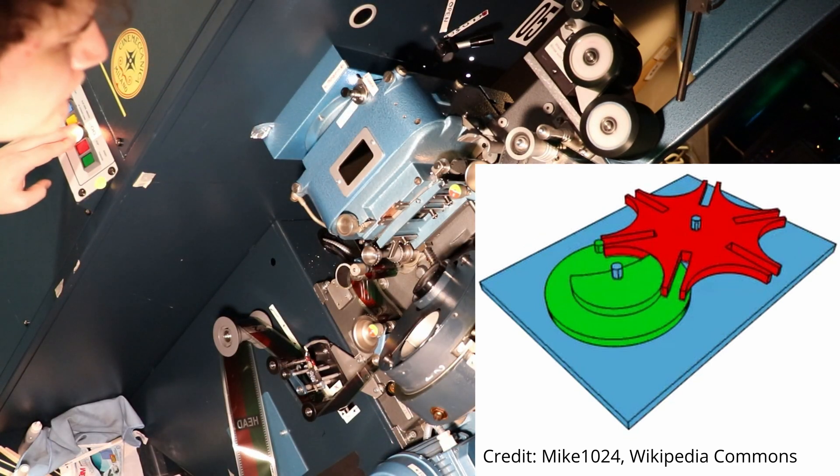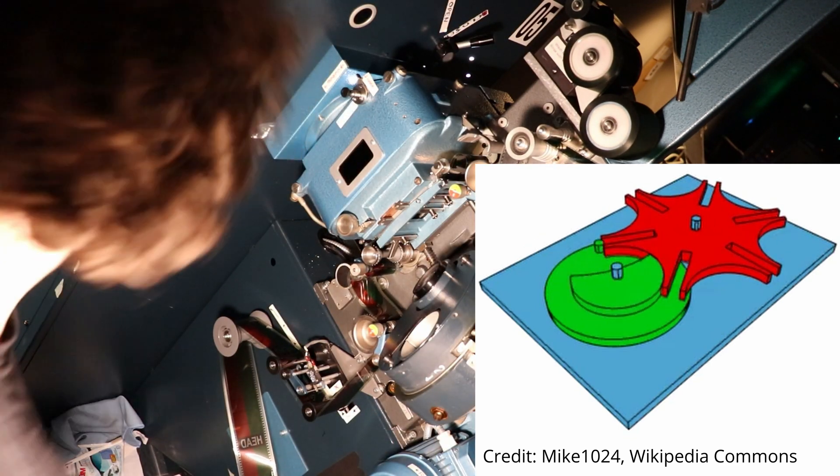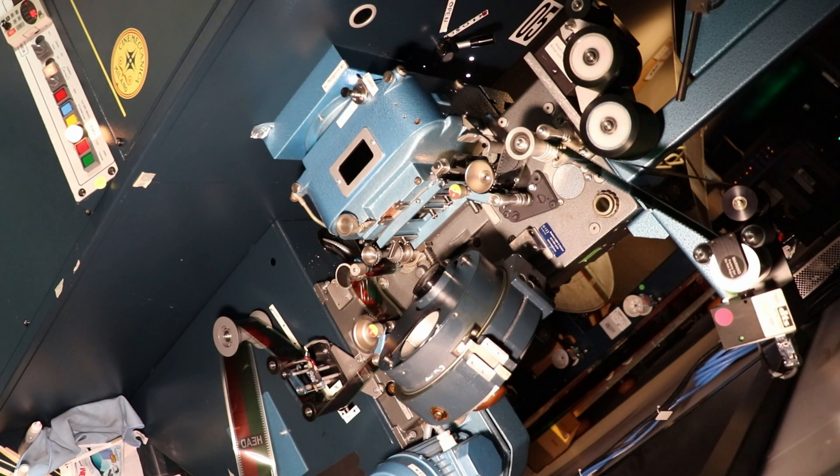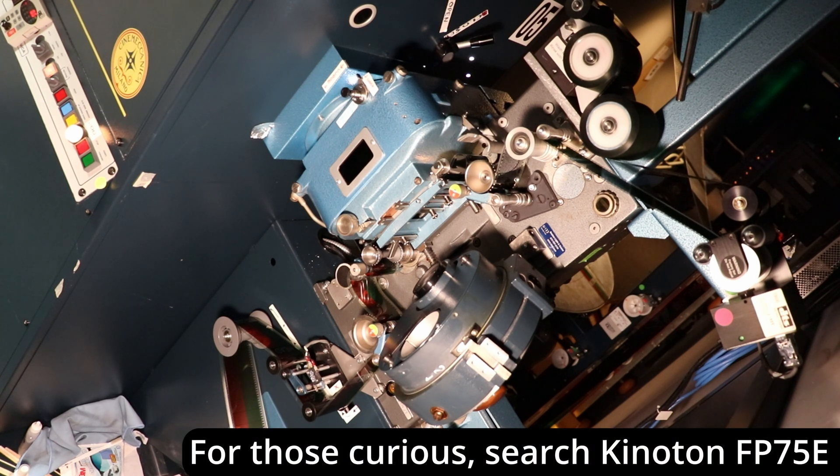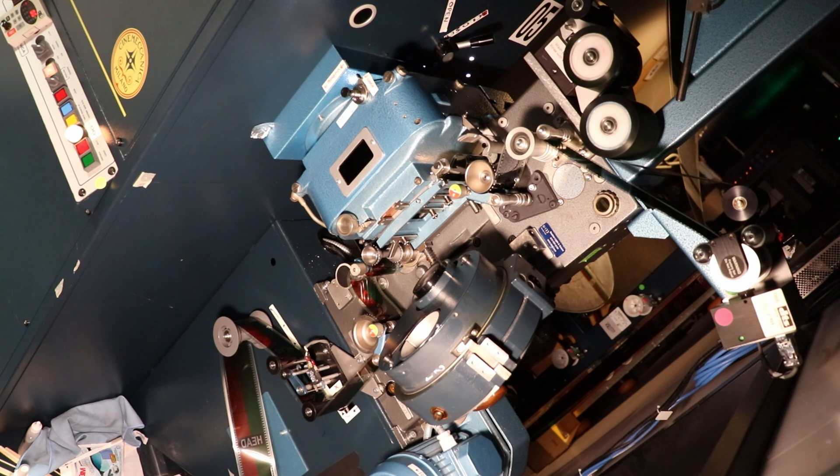This is usually accomplished by a mechanism called a Geneva Drive or Maltese Cross. Some projectors even used a servo motor for this, and they could pull down even faster for a brighter image, but those were much less common.